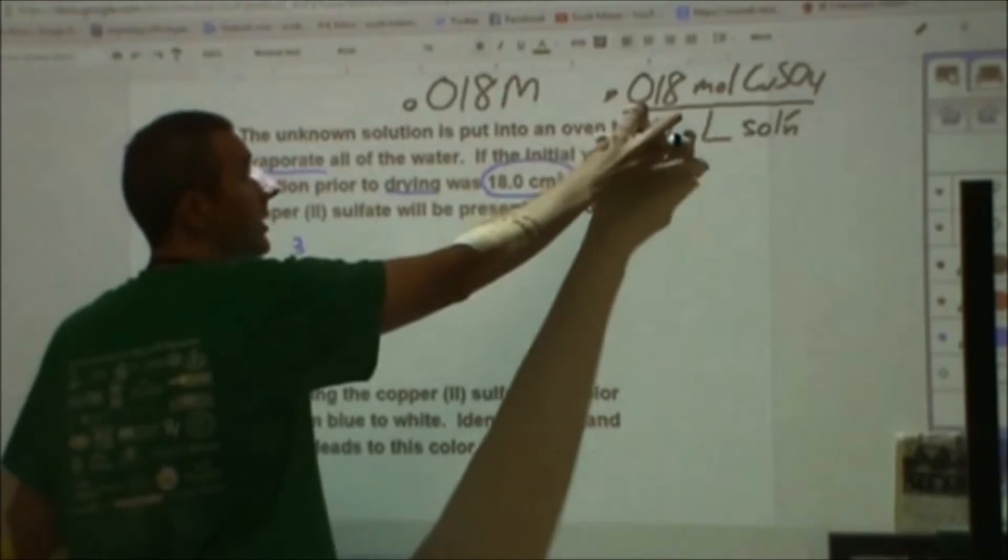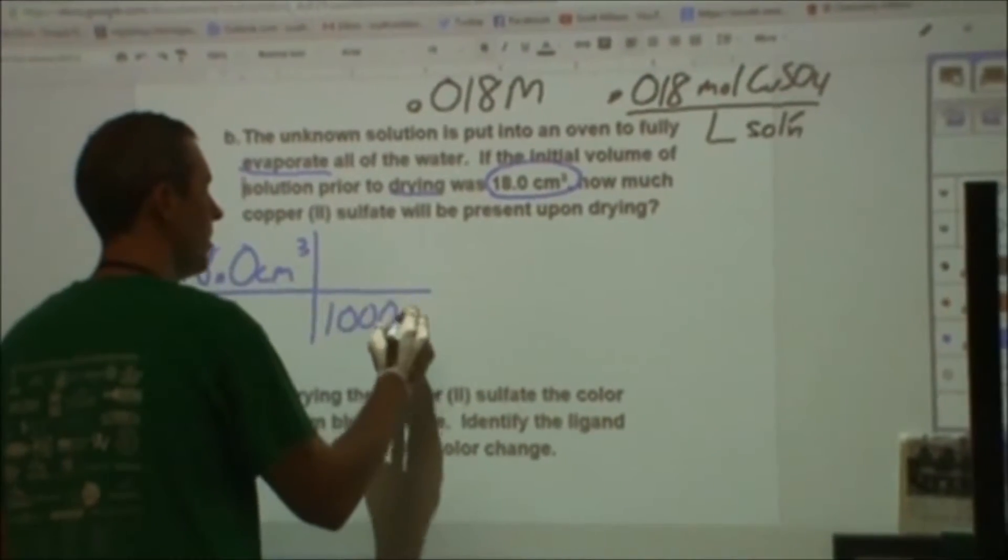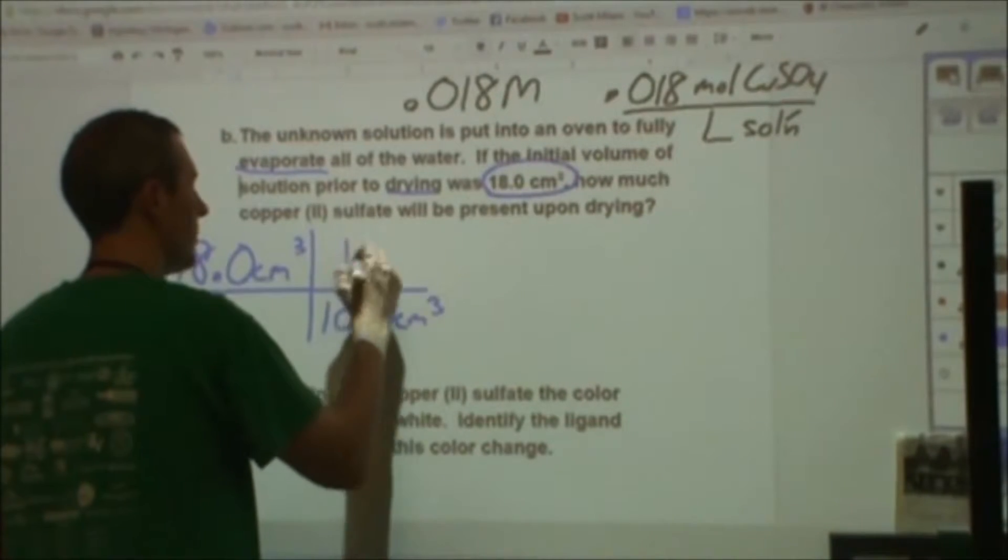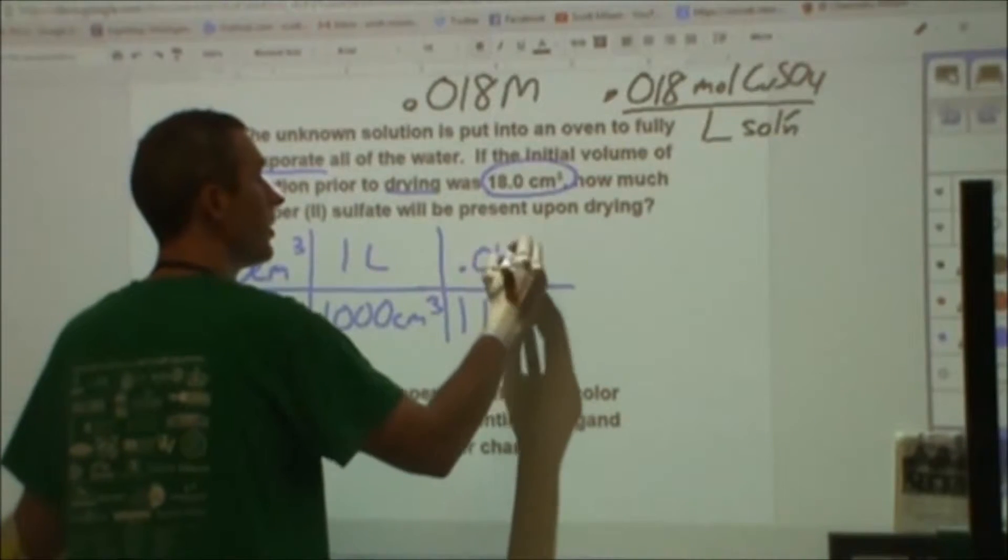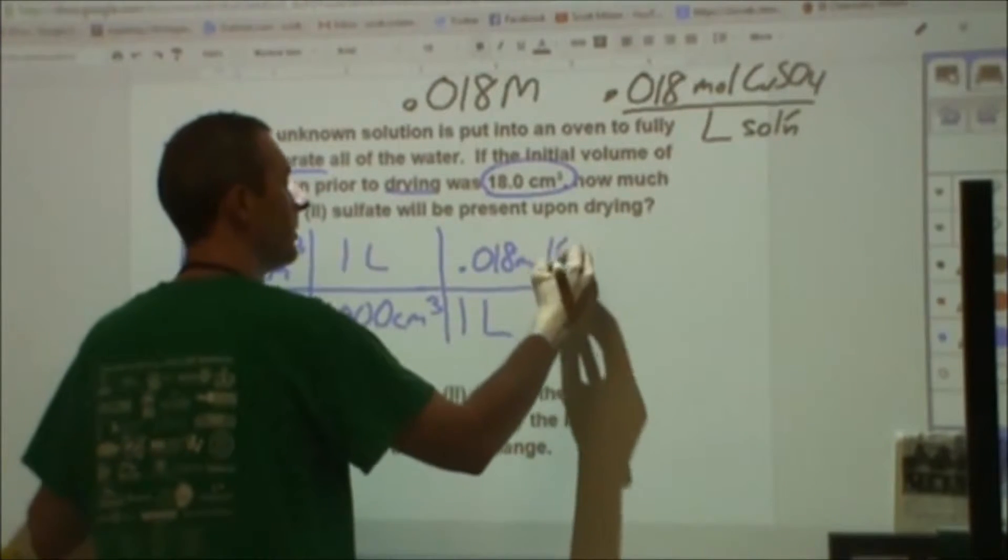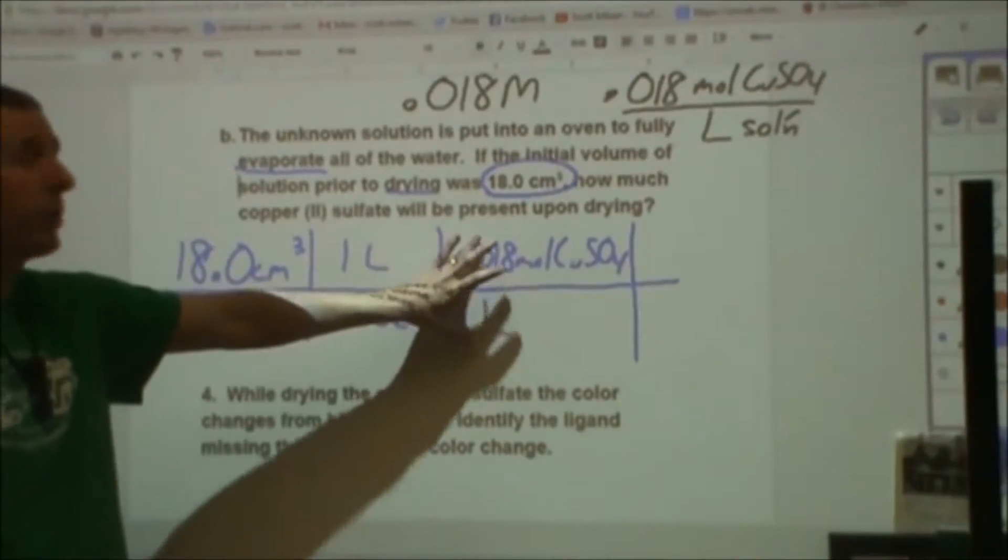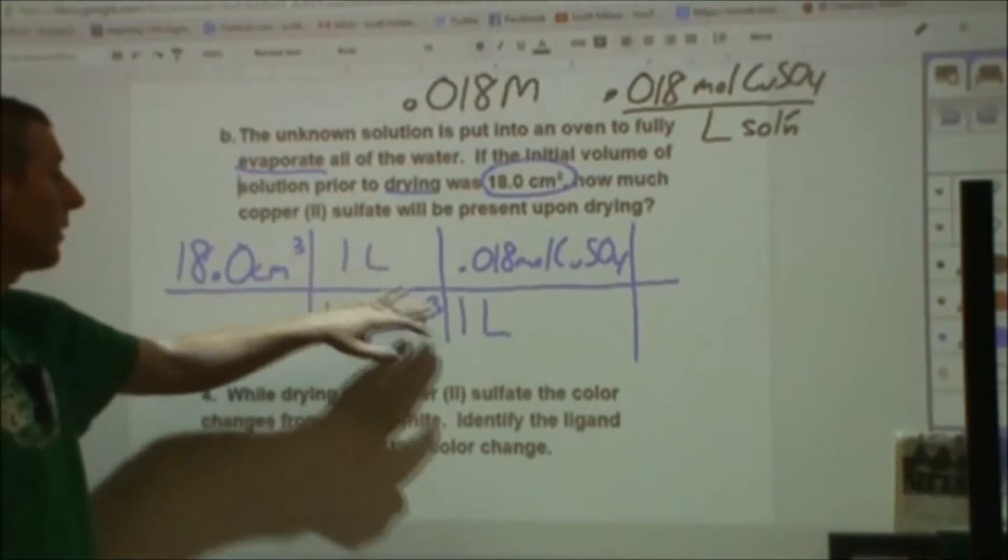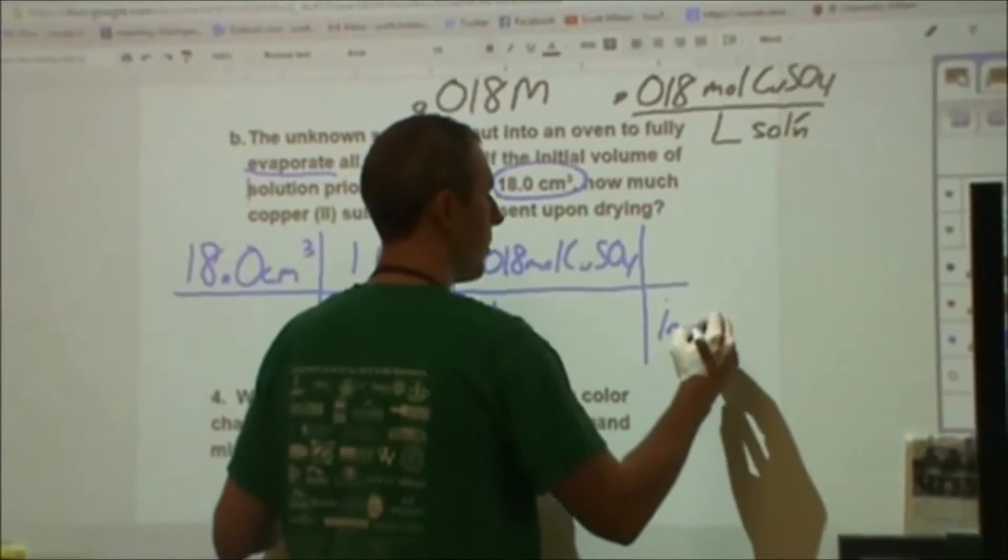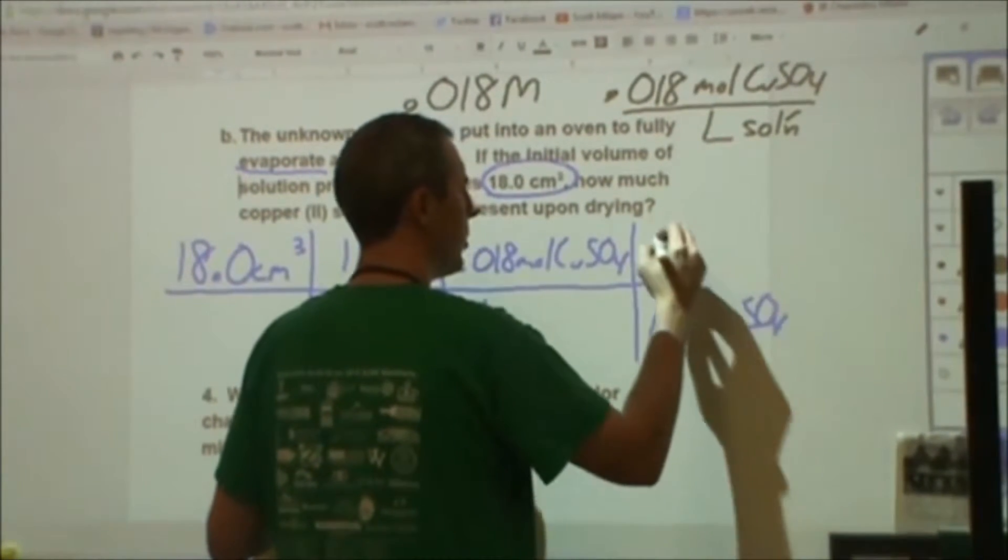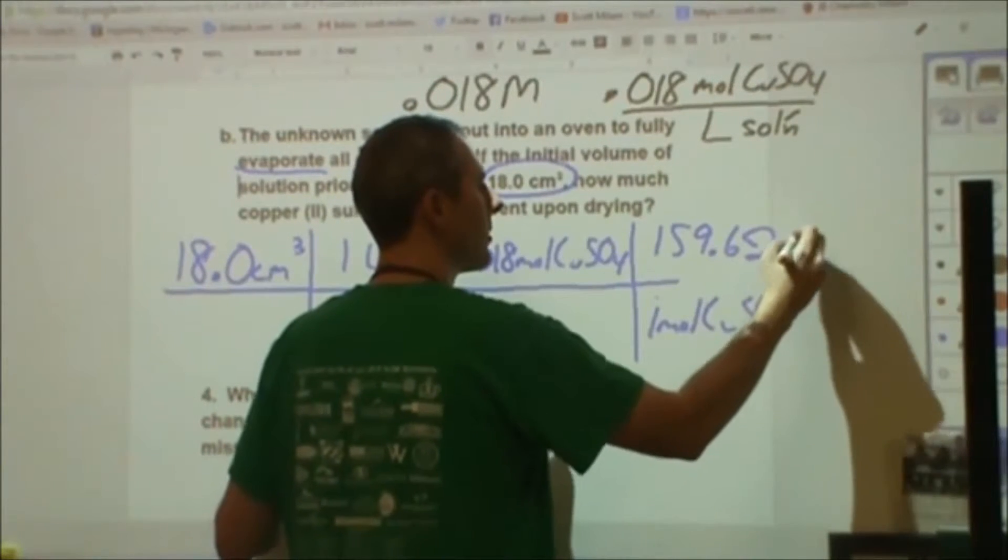What I'm going to do is I'm going to use this as a conversion factor with this. A thousand centimeters cubed is one liter. And then the one liter is equivalent to 0.018 moles of copper sulfate. I'm using the concentration as a conversion factor to change volume into amount of chemical. And then lastly, I'm going to change that to moles, or from moles to grams.